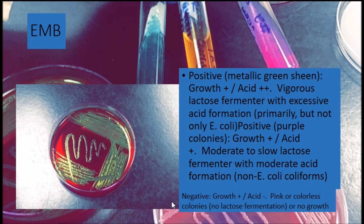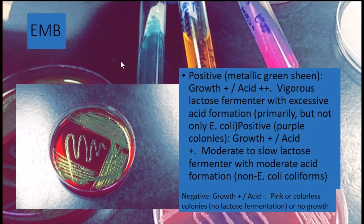Next we have an EMB plate, also called an eosin methylene blue agar. This test's purpose is to select microorganisms based on their ability to grow in the presence of eosin white and methylene blue. It also differentiates microorganisms by their ability to vigorously ferment lactose and produce acid. In this photo, this is E. coli — E. coli produces a metallic green sheen on an EMB plate. Non-E. coli coliforms will produce a purple-type color.